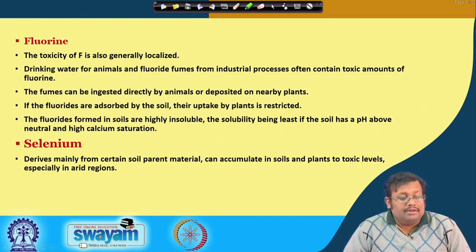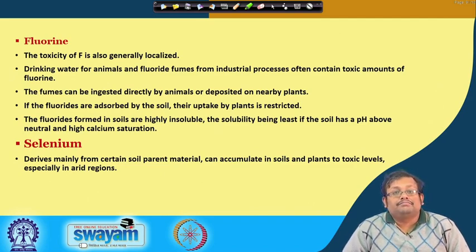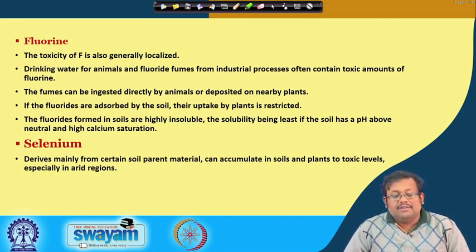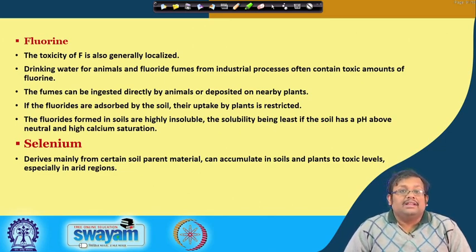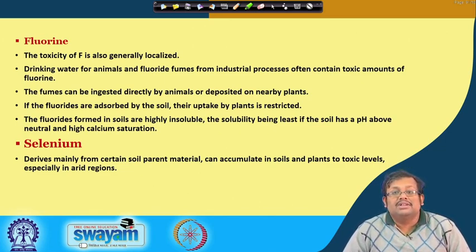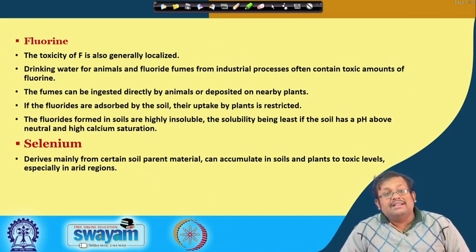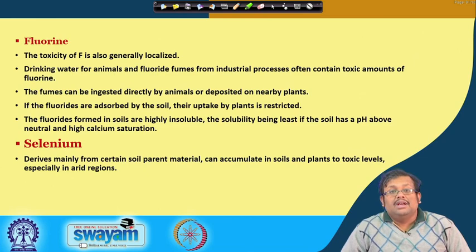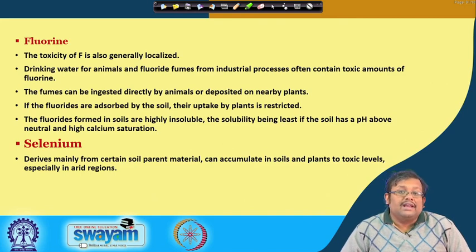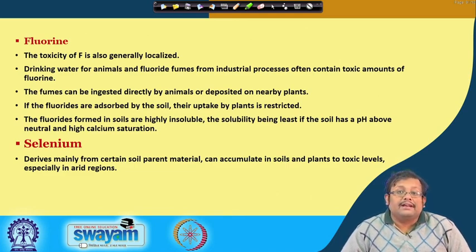Another important element is fluorine. The toxicity of fluorine is generally localized in drinking water for animals. Fluoride fumes from industrial plants often contain toxic amounts of fluorine, and the fumes can be ingested directly by animals or deposited on nearby plants. Fluorides absorbed by the soil have restricted plant uptake; fluoride forms in soil are highly insoluble, with solubility being least when the soil has a pH above neutral and high calcium saturation. Selenium derives mainly from certain soil parent materials and can accumulate in soils and plants to toxic levels, especially in arid regions.